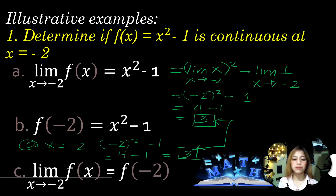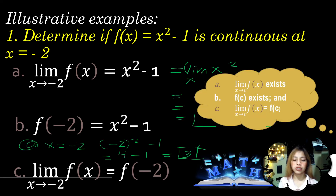Therefore, it also satisfies the third rule — the limit of the function equals its value: 3 = 3. The given function for number 1 satisfies the first, second, and third conditions. Therefore, we can conclude that x² - 1 is continuous at x = -2.